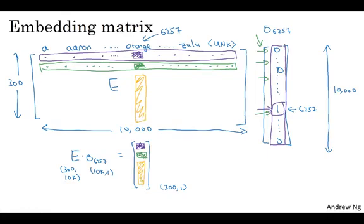So that's why the embedding matrix E times this one hot vector here winds up selecting out this 300 dimensional column corresponding to the word orange. So this is going to be equal to E6257, which is the notation we're going to use to represent the embedding vector, the 300 by one dimensional vector for the word orange. And more generally,